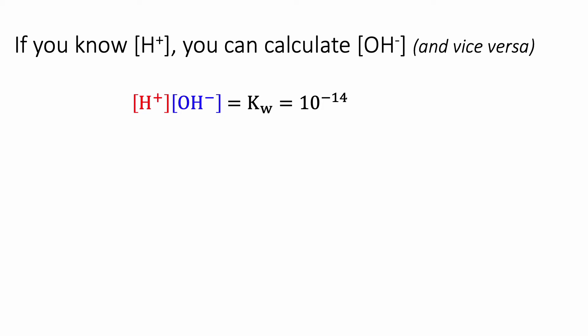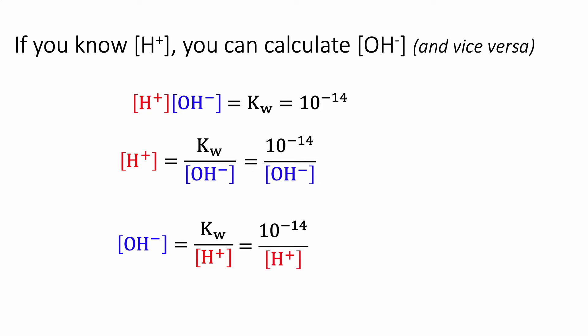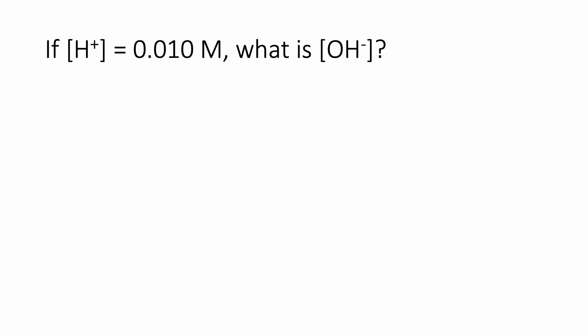Usually H+ is the one that we know, for reasons I'll talk about later. If you rearrange that equation, you get that the H+ concentration equals Kw over OH-, or the way I remember it, 10 to the minus 14th over the OH- concentration. And the OH- concentration equals Kw over H+, or 10 to the minus 14th over H+. So we can easily calculate H+ from OH- concentrations and vice versa.